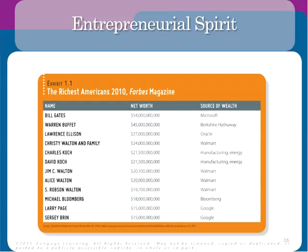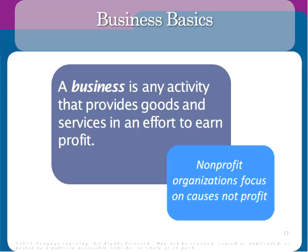The entrepreneurial spirit — everyone should have their initial post up for discussion 1.1. Be sure to choose a different entrepreneur if someone else has already picked yours. The list includes Bill Gates, Warren Buffett, Larry Ellison, the Koch brothers, the Walton siblings, Mike Bloomberg, Larry Page, and Sergey Brin — all worth a lot of money, with Google appearing several times. This is where we want you to be headed as well.